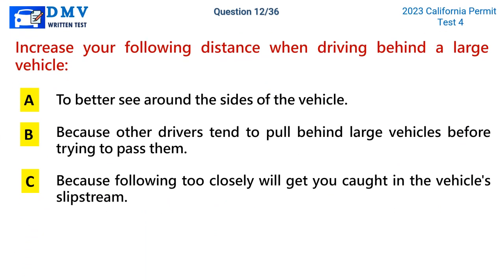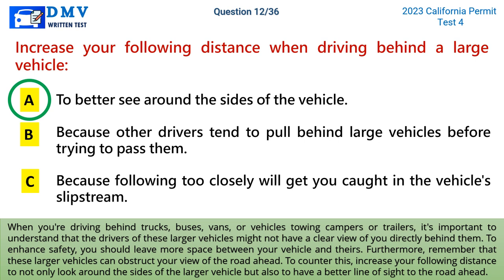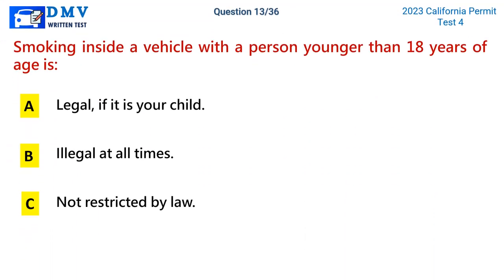Question 12: Increase your following distance when driving behind a large vehicle. A) to better see around the sides of the vehicle, B) because other drivers tend to pull behind large vehicles before trying to pass them, C) because following too closely will get you caught in the vehicle slipstream. The correct answer is A. When driving behind trucks, buses, vans, or vehicles towing campers or trailers, the drivers may not have a clear view of you. Increasing your following distance lets you see around the sides and also provides a better line of sight to the road ahead.